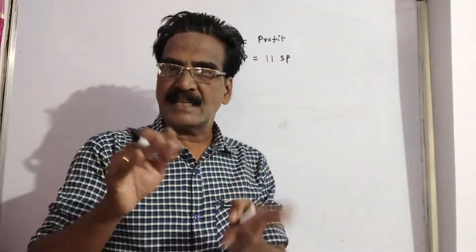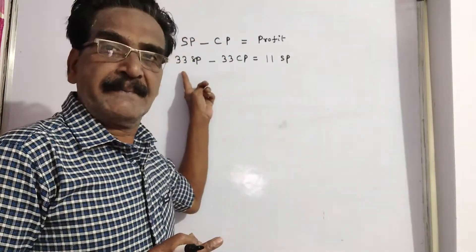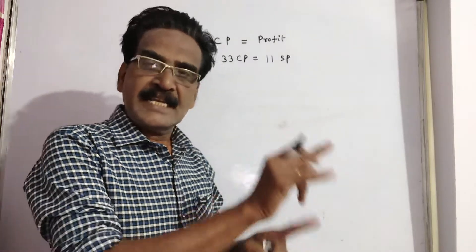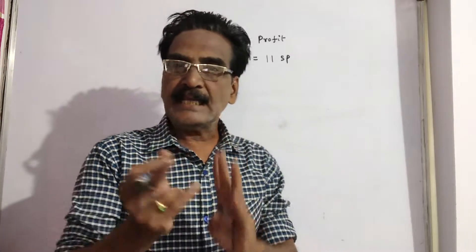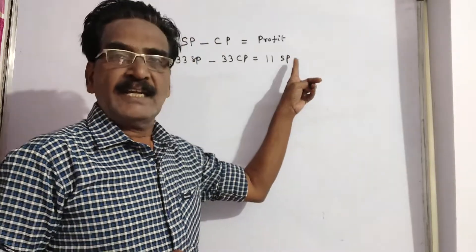Now the profit on selling 33 meters is 33 meters selling price minus 33 meters cost price. What is that profit? The profit is the selling price of 11 meters. So, 33 SP minus 33 CP is equal to 11 SP.